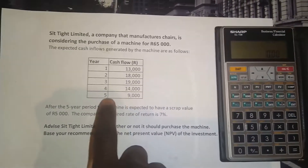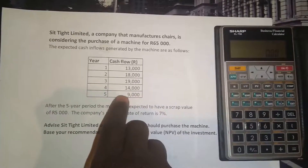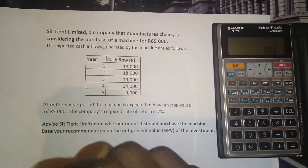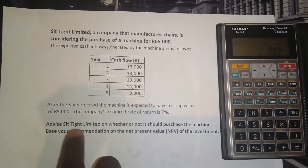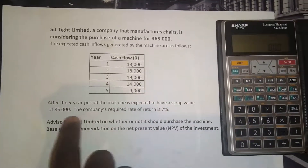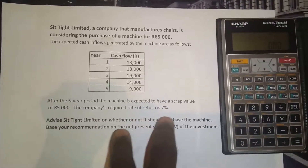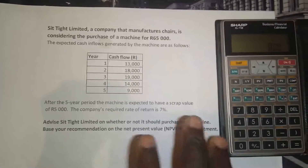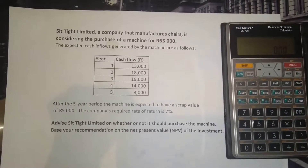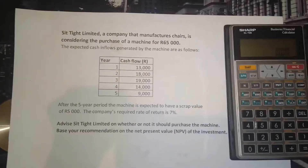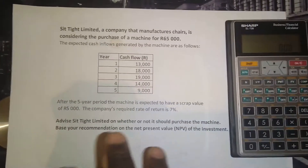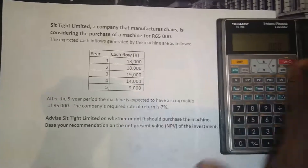We have cash inflows from year one to year five, with no negative cash flows here. If you had a negative cash flow, you would take that into account because the sign — positive or negative — is very important. After the five-year period, the machine is expected to have a scrap value of 5,000 Rand, and the company's required rate of return is 7%. Scrap value refers to the residual value, or how much you can sell the machine for after the fifth year. In this lesson, we'll just focus on the IRR.